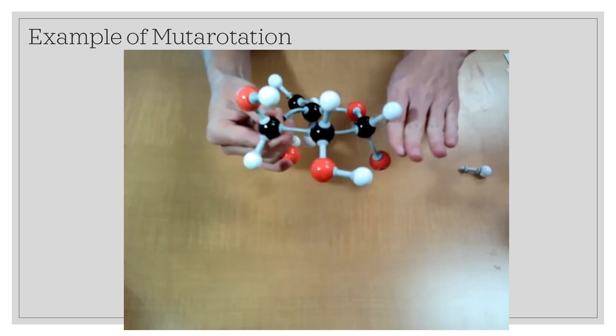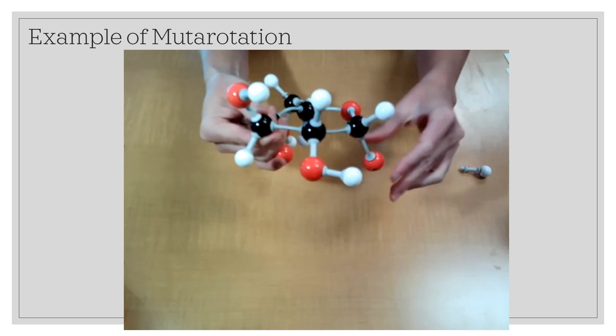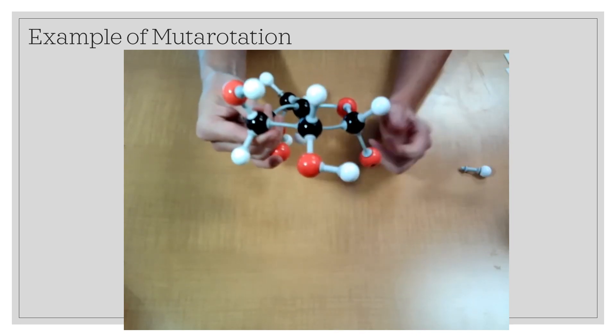Here's the plane. It's pointed down below the plane. My hydroxyl is down. This is the alpha anomer.